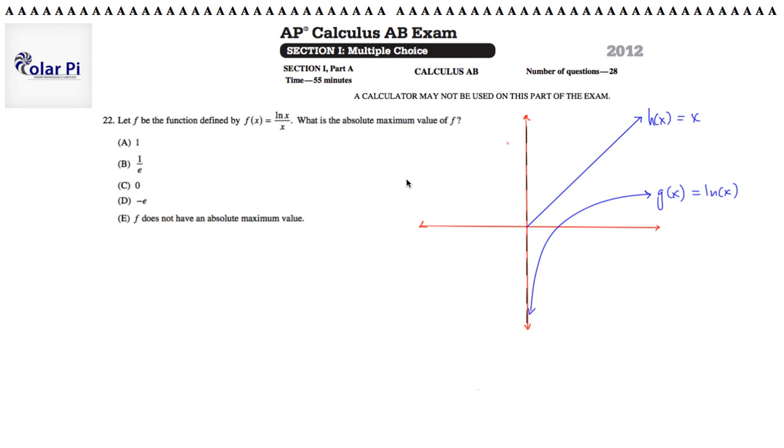Hi, welcome. In this video, I'm going to go through problem 22. And in problem 22, it says, let f be the function defined by the quotient of ln of x and x. And it's saying, what is the absolute maximum value of f?